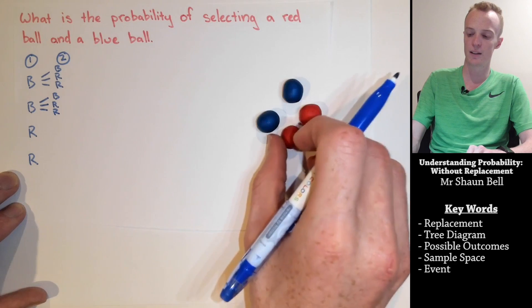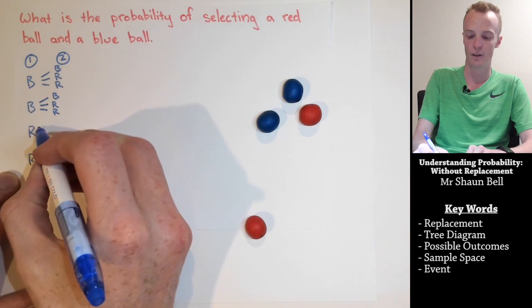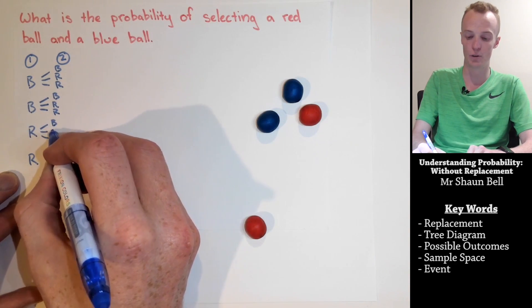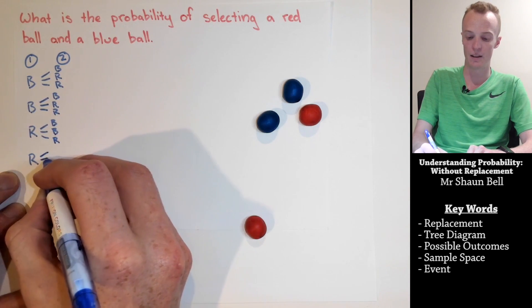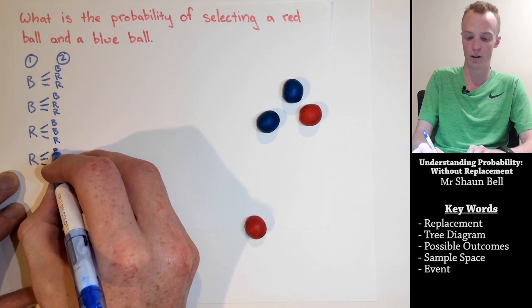However, if I selected the red ball first, there would actually be two blue balls that I could select and another red ball, and it's the same for the final option.